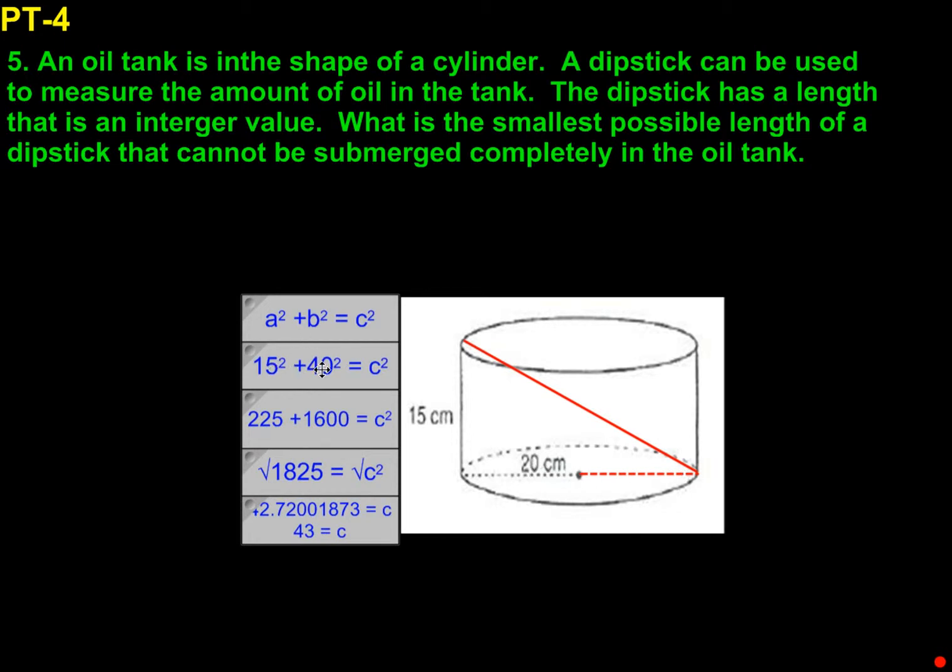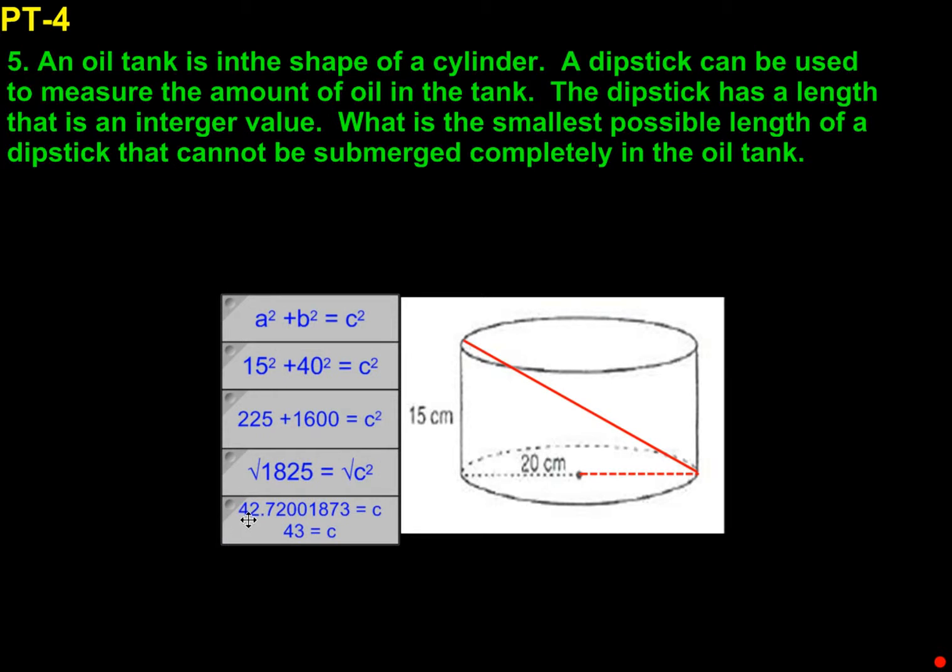We have 15 squared plus 40 squared equals c squared, which gets us 225 plus 1600 equals c squared. That's 1825. The square root of that gets us 42.72001873. But we want the dipstick to fit to the bottom without going beneath the top of the tank, so we need to round up to make sure the dipstick is long enough. 42.7 rounds up to 43.